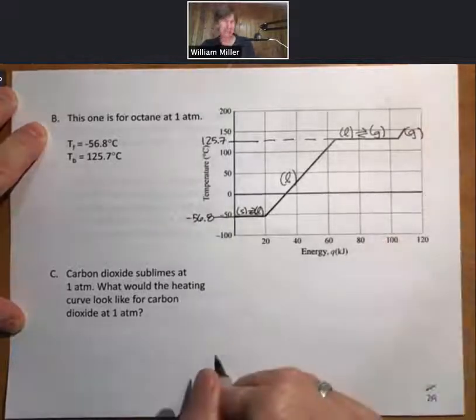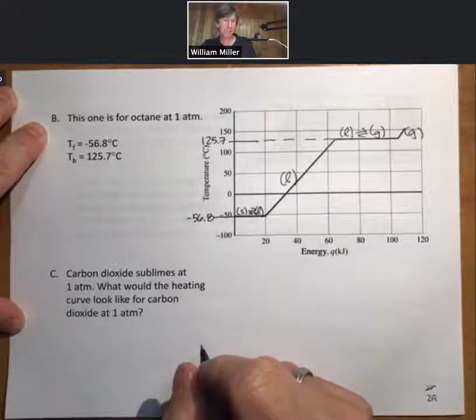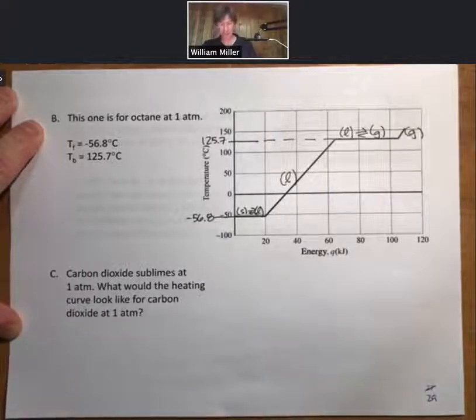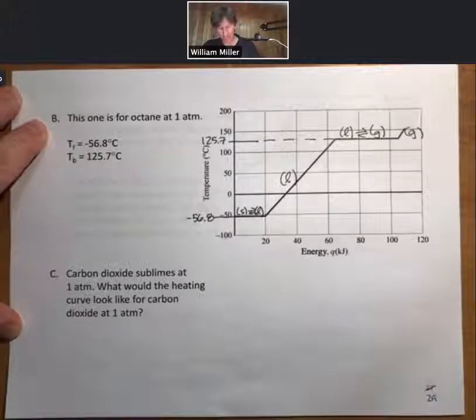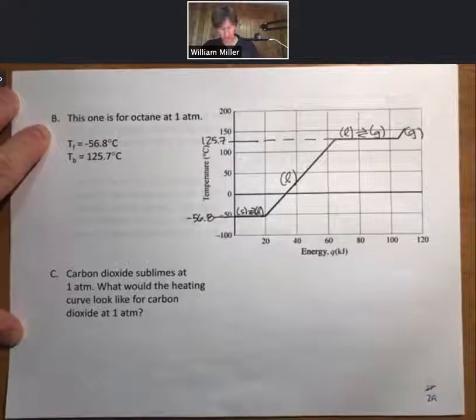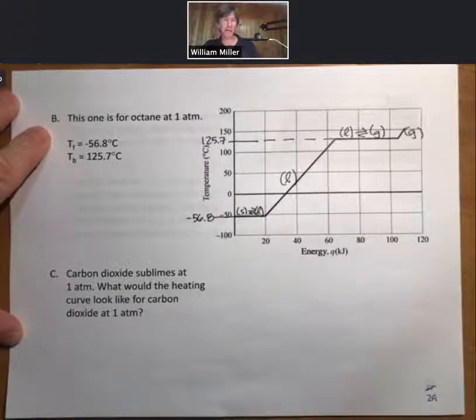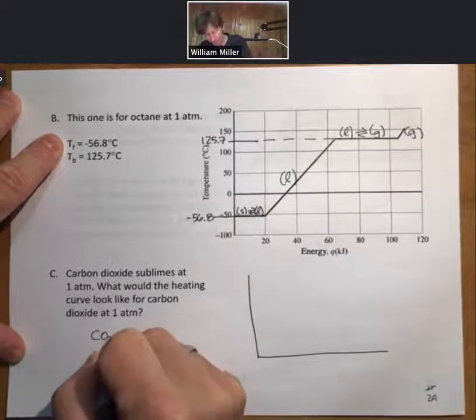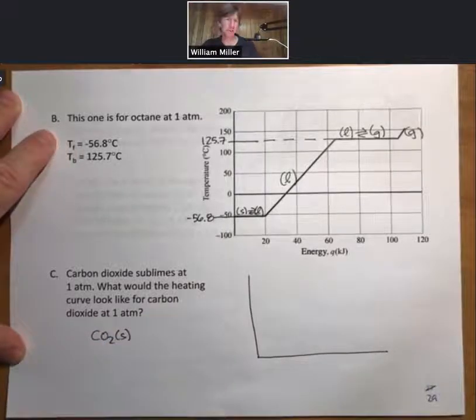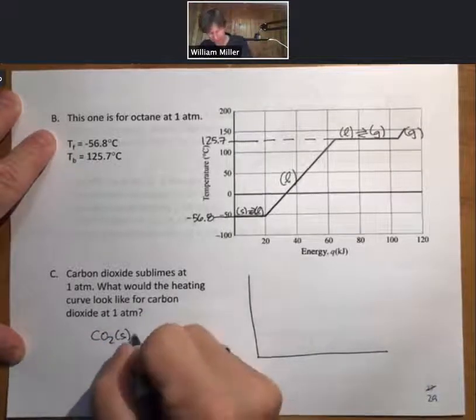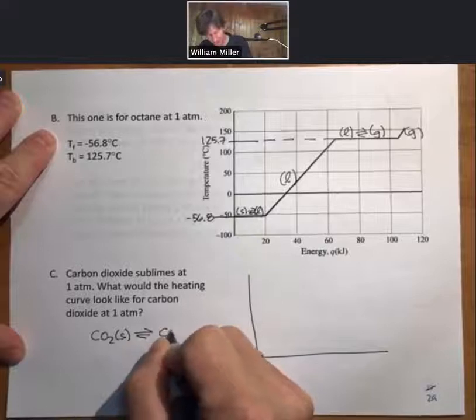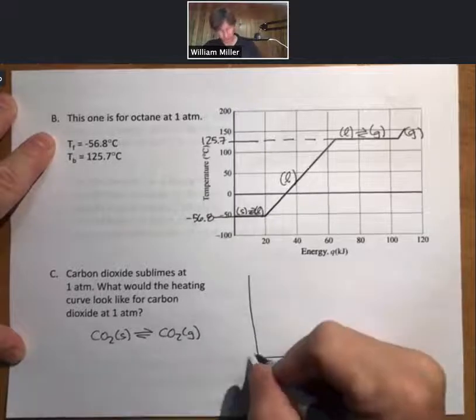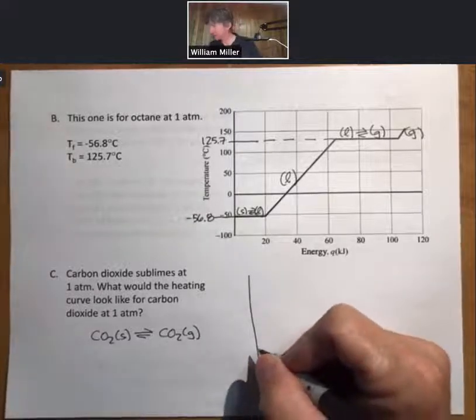We're going to have a temperature increase for the liquid phase, liquid to gas, and then up here at the end we have just gas. So this is a heating curve for octane. Next question: carbon dioxide sublimes at one atmosphere. What would the heating curve look like for carbon dioxide at one atmosphere? Well, sublimation means that we go from carbon dioxide solid straight to carbon dioxide gas.